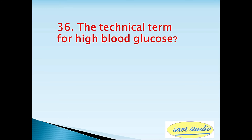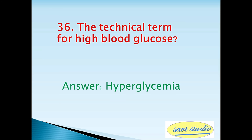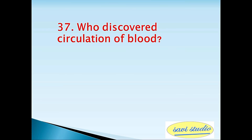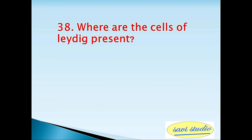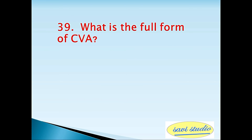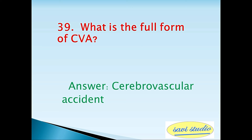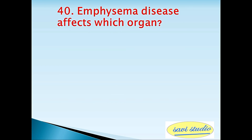Thirty-fourth question: Enterokinase enzyme is found in — answer: intestinal juice. Thirty-fifth question: The mammal with nucleated RBCs is — answer: camel. Thirty-sixth question: The technical term for high blood glucose is — answer: hyperglycemia. Thirty-seventh question: Who discovered circulation of blood? Answer: William Harvey. Thirty-eighth question: Where are the cells of Leydig present? Answer: testes.